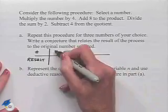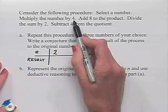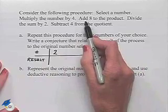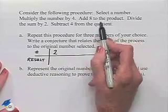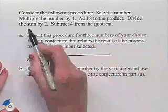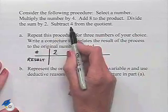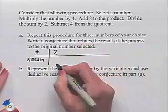Let's begin just with the number 2. We're going to multiply that number by 4. 2 times 4 is 8. Add 8 to the product, and so we end up with 8 plus 8 to give us 16. Divide the sum by 2. 16 divided by 2 is 8, and then subtract 4, and 8 minus 4 is 4.